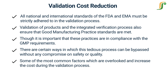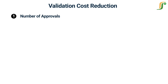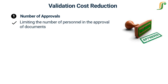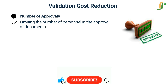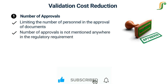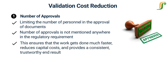The first factor is the number of approvals. The first step that can be taken to cut down costs and reduce time delay is by limiting the number of personnel in the approval of documents. The required number of approvals is not explicitly mentioned anywhere in the regulatory requirements, and thus can be limited to a minimum number of document reviewers. This ensures work gets done faster, reduces capital costs, and provides a consistent, trustworthy end result.